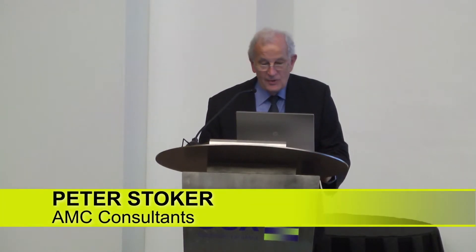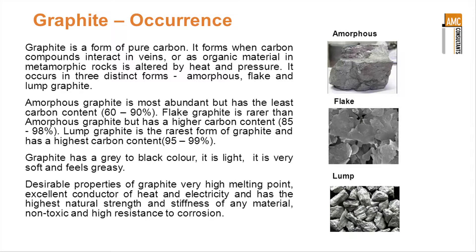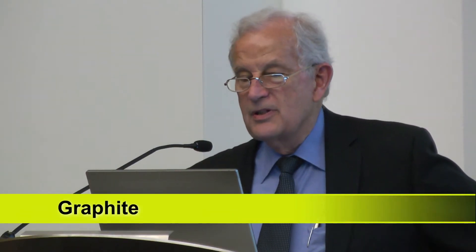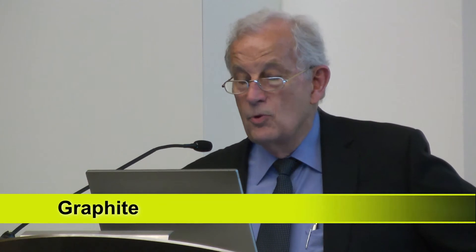It's a very flavour of the month mineral, but flavour of the month and uses are widespread, so it's very difficult to get your head around. It's found in nature in three forms: amorphous, graphite, flake graphite and lump graphite. Generally the carbon content of those three raw materials is different, and so you have to match the raw material you've got with the eventual use you need.